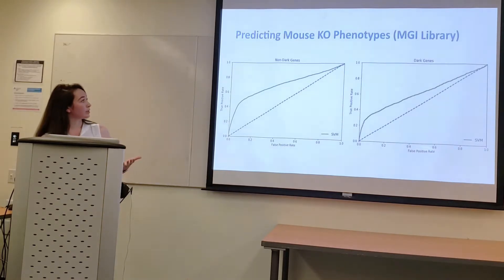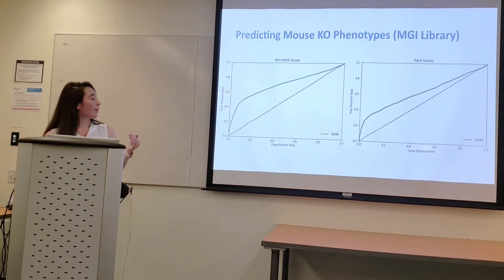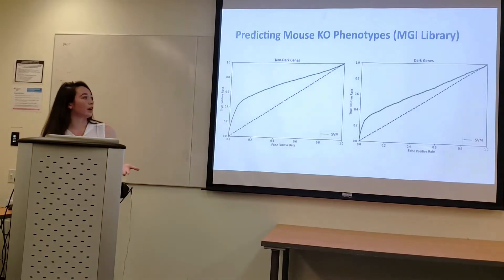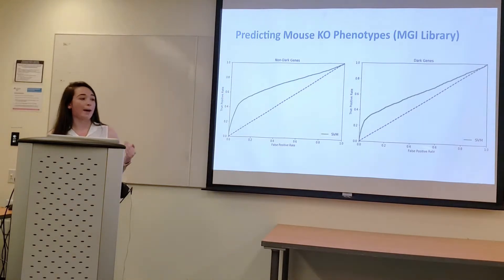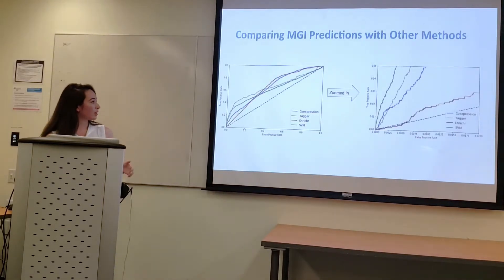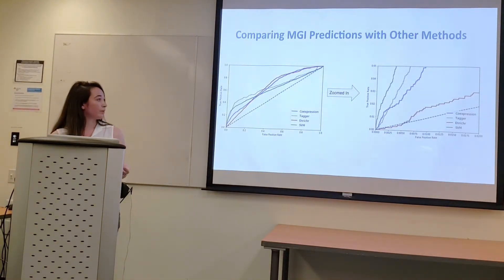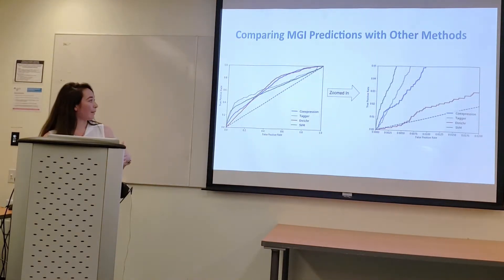Here is the precision-recall curve for the SVM tested on MGI terms, on non-dark genes and then on dark genes. There is some slight loss in accuracy, but overall it is still a very good model. It is interesting to note that the initial steep curve seen in the HPO library is not present here. However, in the comparisons, the SVM still outperforms the rest of the prediction methods at the beginning. Tagger overall slightly outperforms the SVM, but the difference is much smaller in this library.